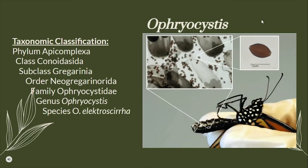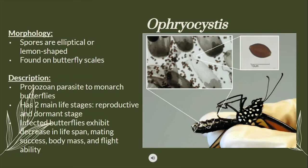On this slide we will find the taxonomic classification for Ophryocystis. Ophryocystis spores are elliptical or lemon-shaped and are usually found on butterfly scales. It is a protozoan parasite of the monarch butterfly and has two main life stages: the reproductive stage and the dormant stage. Infected butterflies exhibit decrease in lifespan, mating success, body mass, and flight ability.